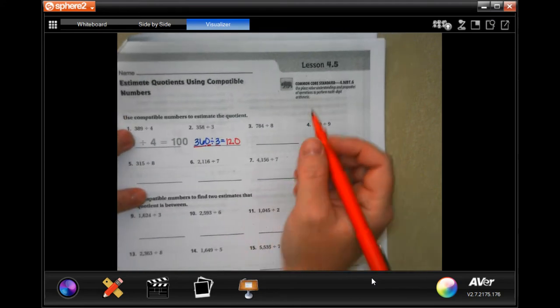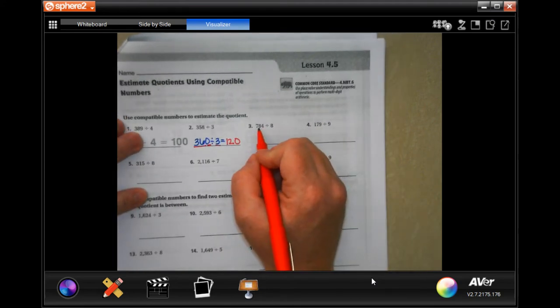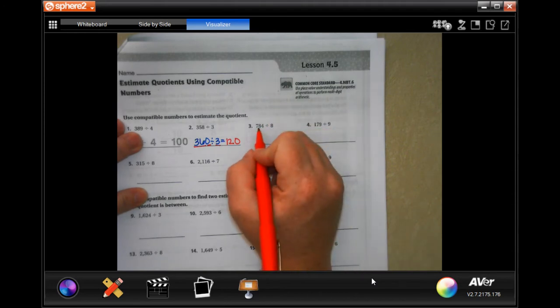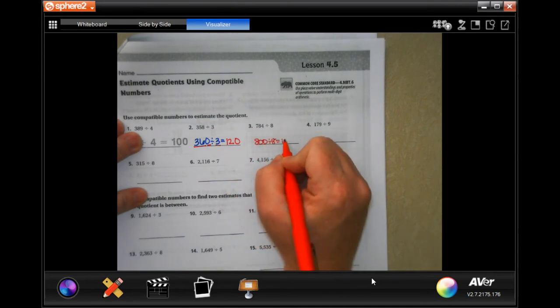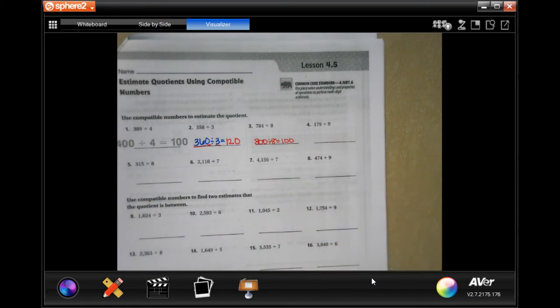So we're going to try it again. 784, I would round that to 800 and divide that by 8 and get 100. Not bad.